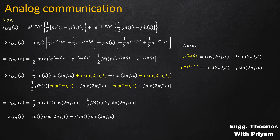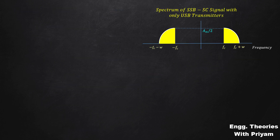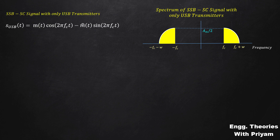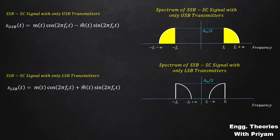The lower sideband SSBSC modulated signal in the time domain equals m(t)·cos(2πFct) - j²·m̂(t)·sin(2πFct). Since j² = -1, this becomes m(t)·cos(2πFct) + m̂(t)·sin(2πFct). So the SSBSC signal with only USB has the equation m(t)·cos(2πFct) - m̂(t)·sin(2πFct), and the SSBSC signal with only LSB has the equation m(t)·cos(2πFct) + m̂(t)·sin(2πFct).